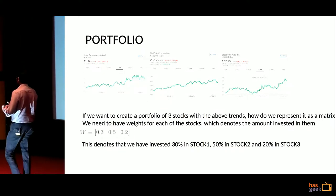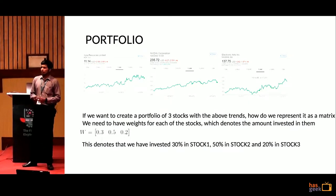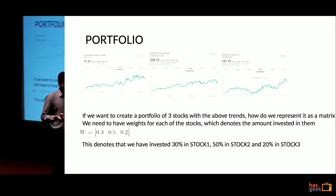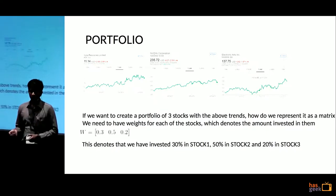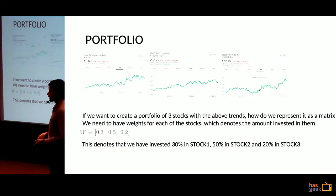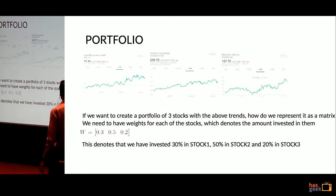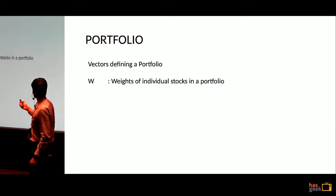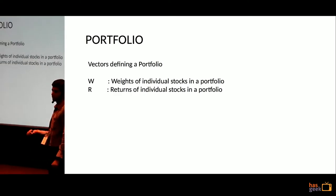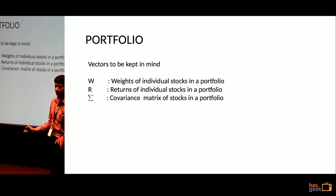For earning money, we need to buy stuff, and we don't buy a single stock — we buy multiple stocks. That collection of multiple stocks constitutes a portfolio. To represent it mathematically, let's say we have 100 rupees: we invest 30 in stock 1, 50 in stock 2, and 20 in stock 3. The corresponding weight vector is [0.3, 0.5, 0.2]. The vectors defining a portfolio are: the weights vector, returns from the market, and the covariance matrix based on the returns vector.